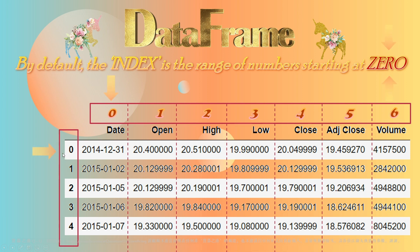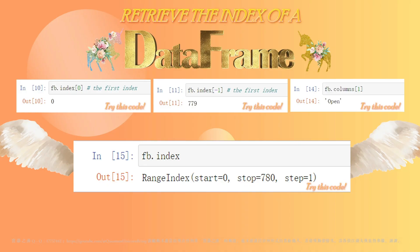This makes things a little confusing because by default the index is just the range of numbers starting at zero. However, we can also manually define an index, such as a group of labels for the rows. Hopefully this clears things up a little bit. But if you are still confused, it's probably best to work with some examples.